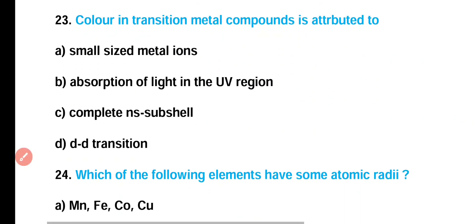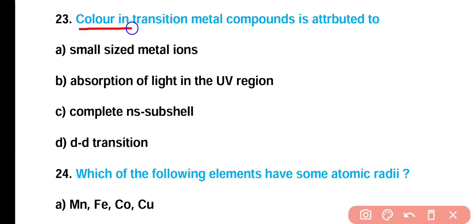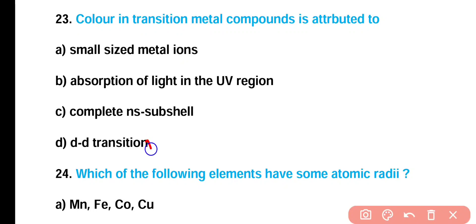Question number 23: Color in transition metal compounds is attributed to — (A) small-sized metal ions, (B) absorption of light in the UV region, (C) complete NS subshell, or (D) d-d transitions? Correct answer is option D. Color in transition metal compounds depends on the availability of unpaired electrons in the d subshell, enabling d-d transitions.